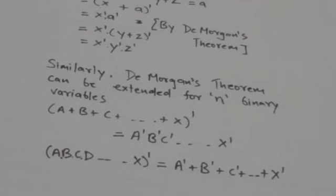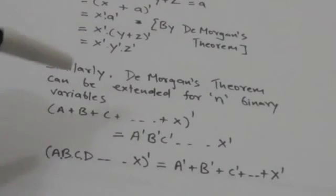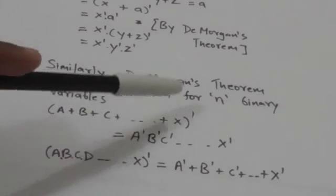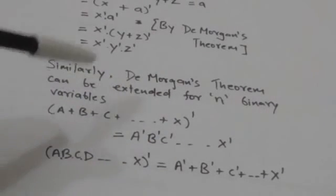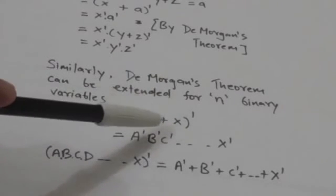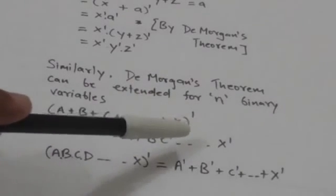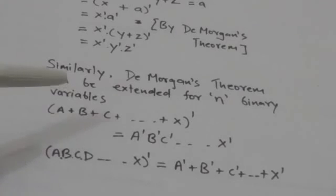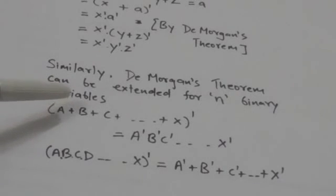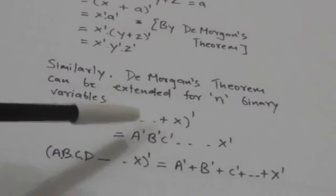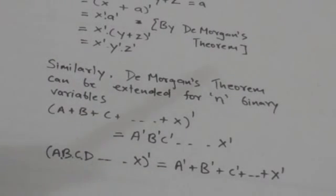So the full expression becomes X complement AND Y complement AND Z complement. Similarly, De Morgan's theorem can be extended for N binary variables. The complement of A + B + C + ... + X will be equal to A complement AND B complement AND C complement and so on up to X complement. Here, the plus operator denotes the OR logic operation, and the absence of an operator or the dot operator represents the AND operation.